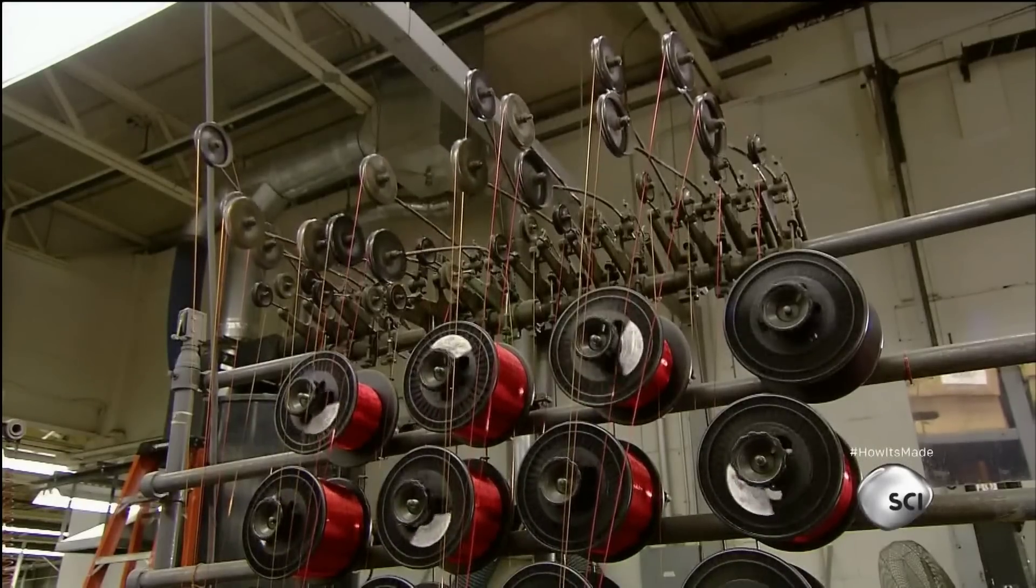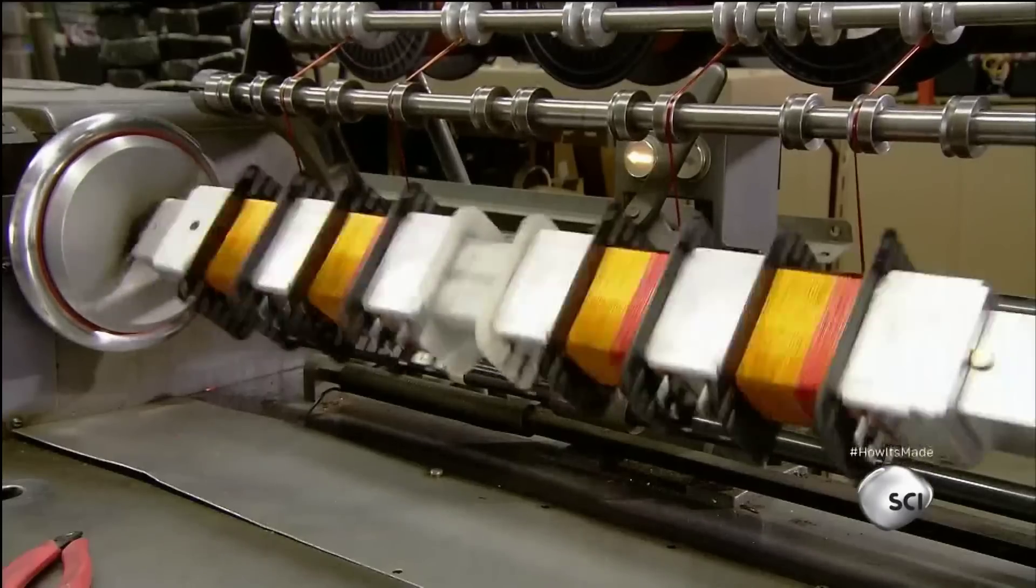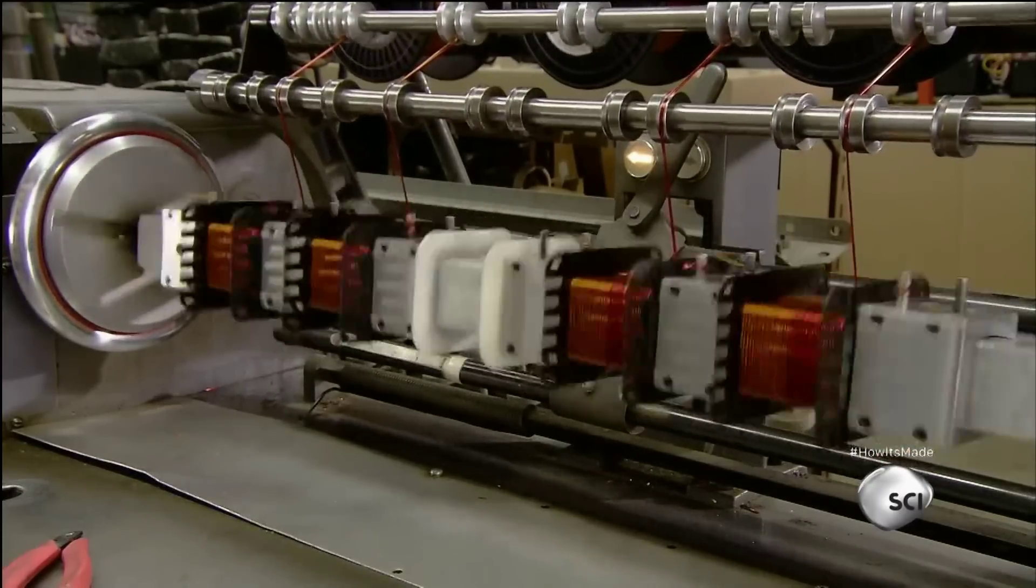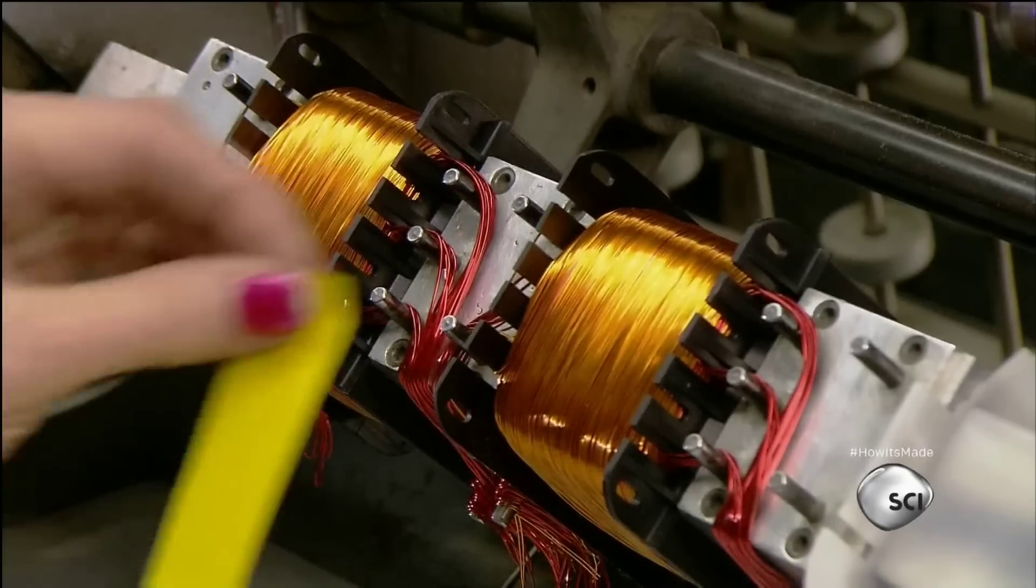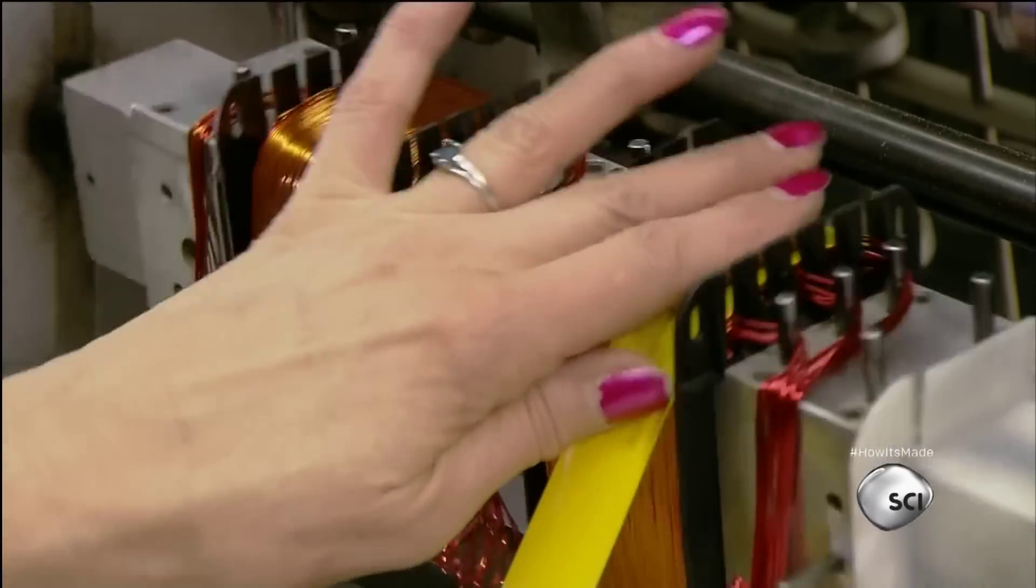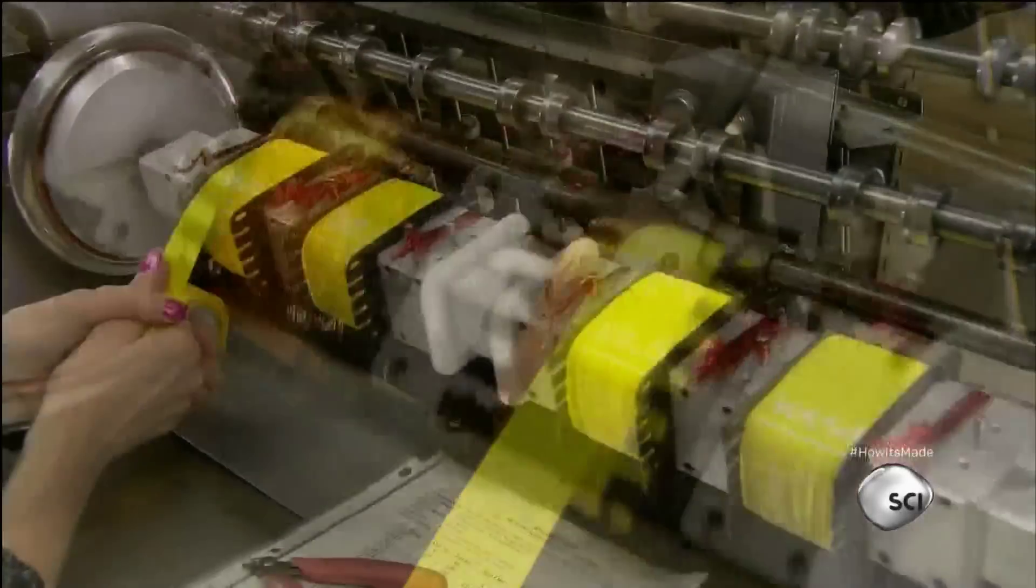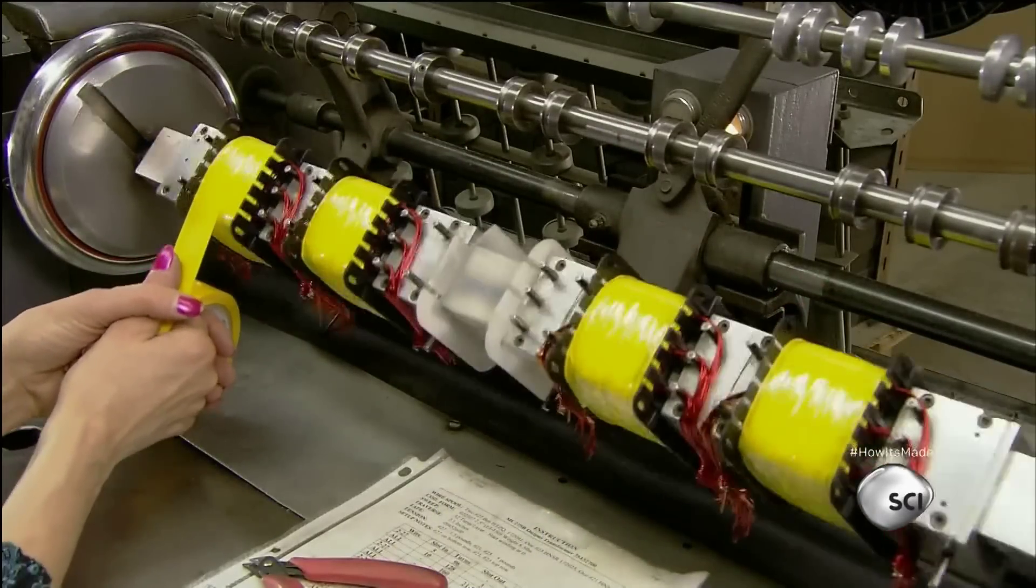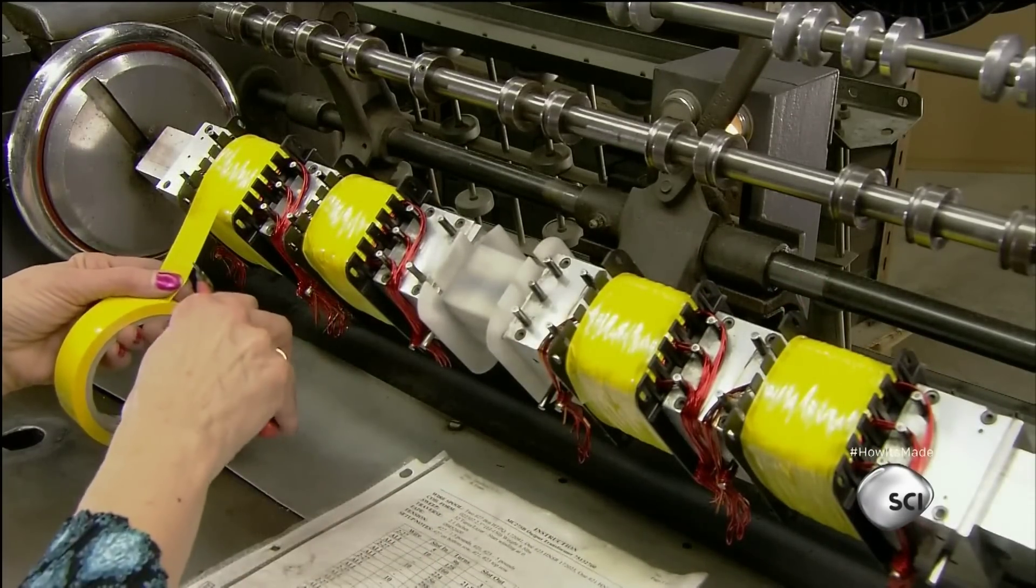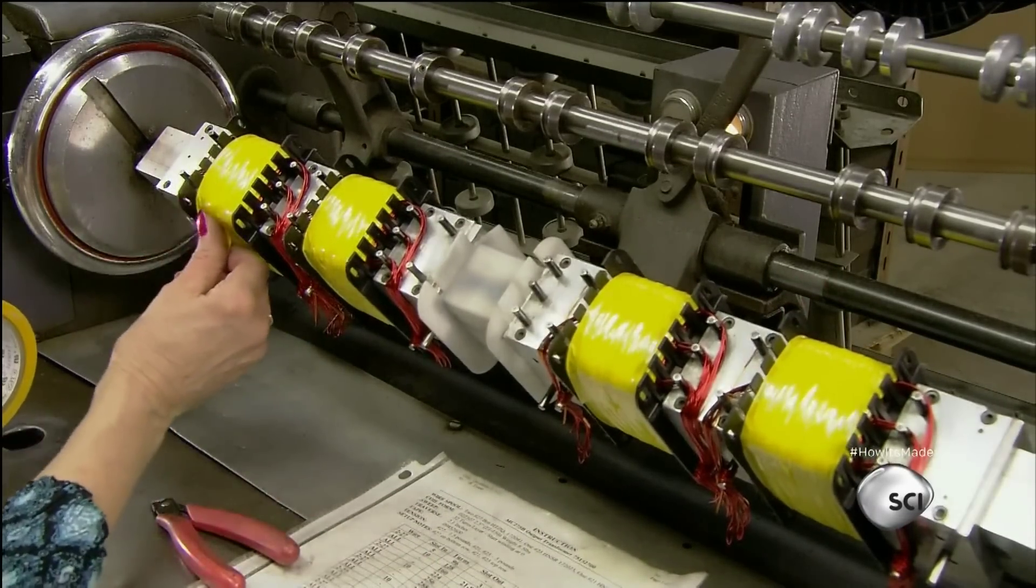Meanwhile, this machine winds strands of copper wire around plastic bobbins to begin making the amp's output transformers. Output transformers match the amp's circuitry to the electronic specifications of different types of speakers. The number of wires, their different gauges, and the number of revolutions around the bobbin create this unique compatibility.